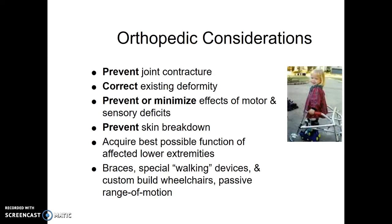We want to prevent contractures — if a joint isn't used, it will contracture — and correct any existing deformities from disuse in utero. We work to prevent or minimize effects from motor and sensory deficits. Many of these kids use walkers, braces, or wheelchairs. Some use low-to-the-ground tricycle-type devices and learn quickly to navigate independently using their hands. A key concern is skin breakdown — wheelchair-bound kids often have no sensation and can sit in the same position for hours doing damage without feeling it, so we must actively prevent pressure injuries.